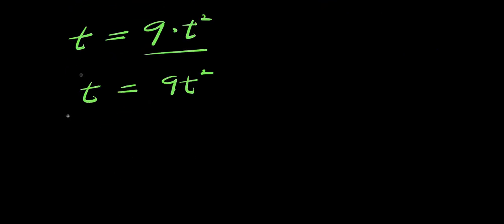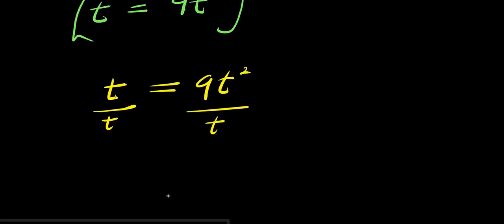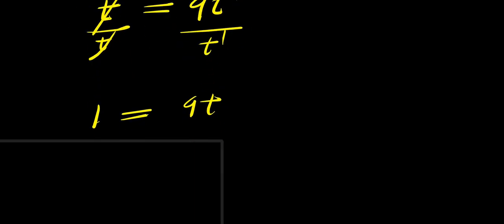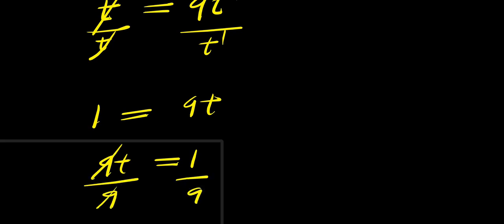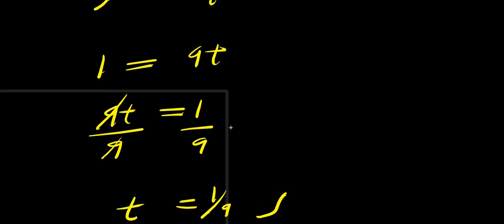Now you can decide to solve it in different ways. If you have t equals 9t squared, I can divide both sides by t. So t eliminates t, and I have 1 equals 9t. So from here, I can simply have 9t equals 1, divide both sides by 9, and I simply have t equals 1 over 9. This gives me only one solution.